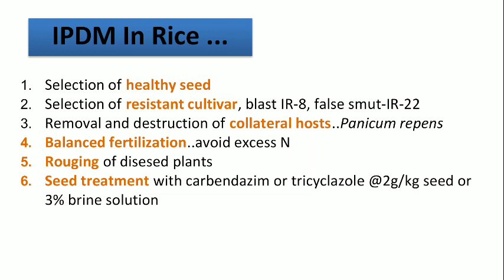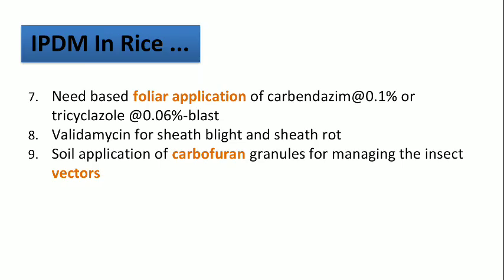Excess fertilization — particularly excess doses of nitrogen — increases disease incidence or severity, so avoid excess nitrogen and go for balanced fertilization at the recommended dose. Also practice roguing of diseased plants. Since the pathogen survives in the seed, go for proper seed treatment with chemicals — seed dressers or systemic fungicide such as Carbendazim or Tricyclazole at the rate of 2 grams per kg seed, or give a 3% brine solution treatment of common salt. For IPDM in rice, need-based foliar application of Carbendazim and Tricyclazole at the recommended dose is given to control blast.